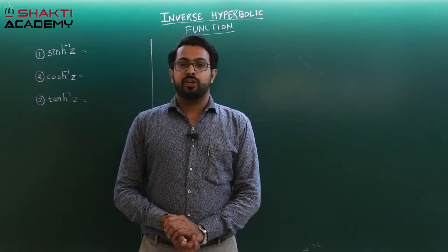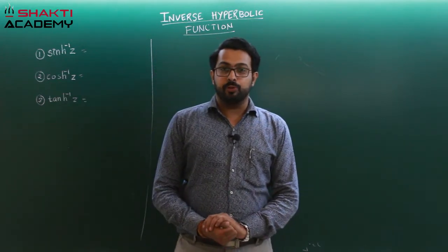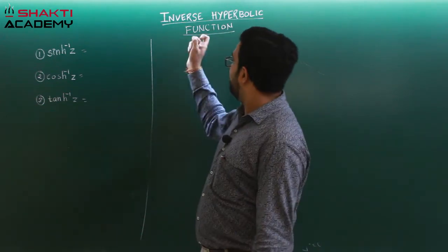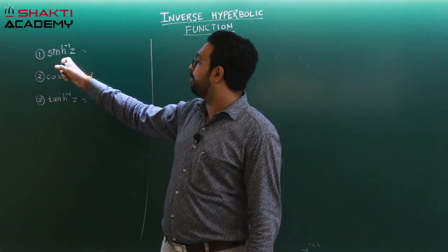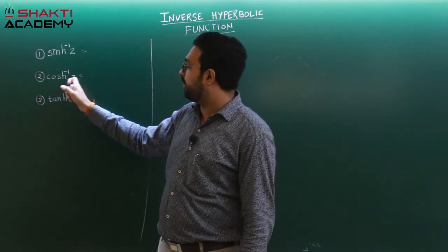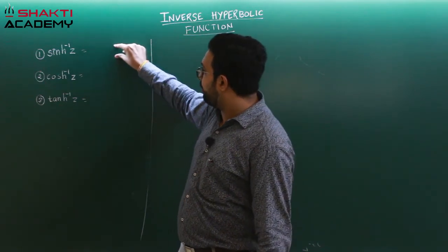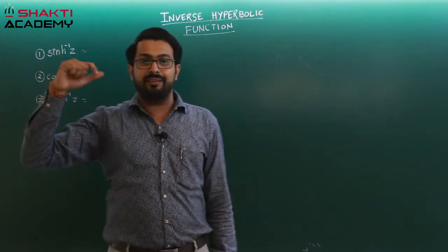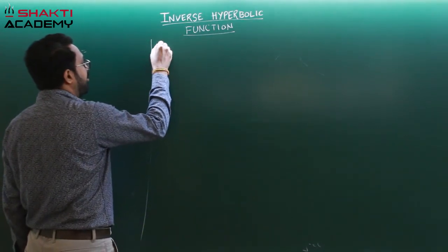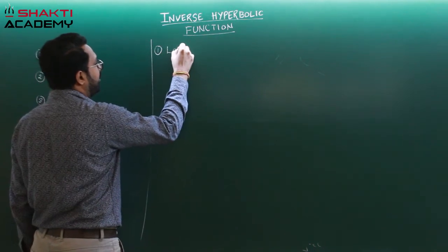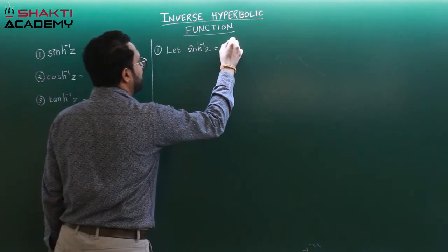Hi friends, today's topic is inverse hyperbolic functions. Like inverse trigonometric functions, we have inverse hyperbolic functions. We'll consider three basic inverse hyperbolic functions: sine hyperbolic inverse, cos hyperbolic inverse, and tan hyperbolic inverse. To derive the formula, we'll use a similar approach as in trigonometry. We'll consider sine hyperbolic inverse of z equal to some value, let's say theta.